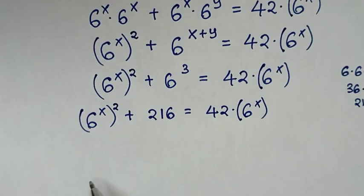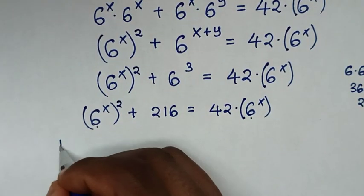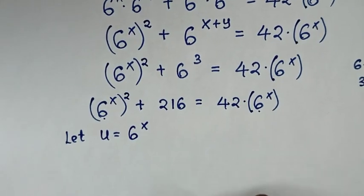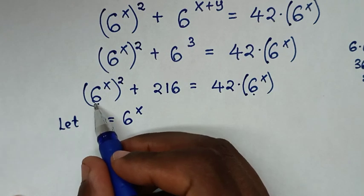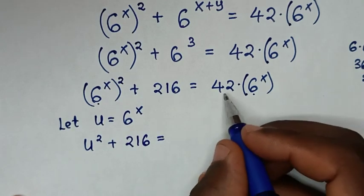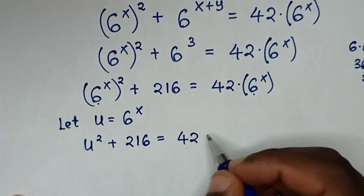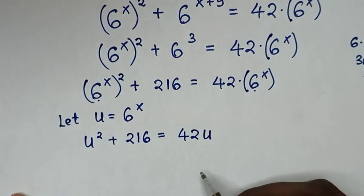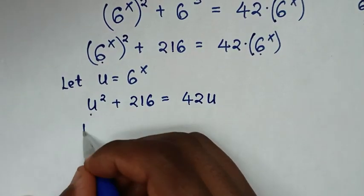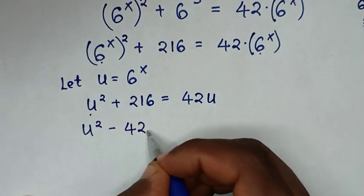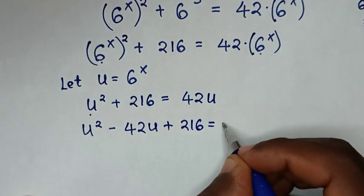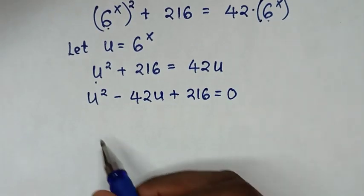In here, 6 power x is common, so we let u equal to 6 power x. The equation becomes u squared plus 216 is equal to 42u. We take 42u to the left side, giving u squared minus 42u plus 216 is equal to 0.